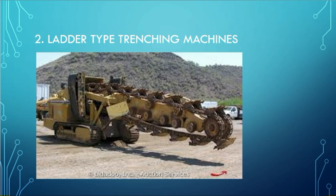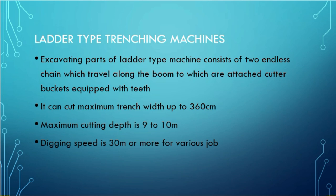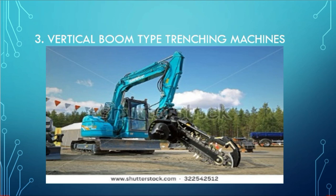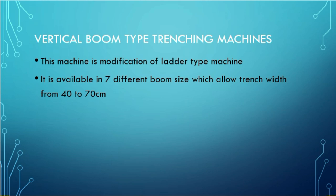This is a ladder type trenching machine and you can see the large boom. This ladder type trenching machine has a boom of 16 meters, which is larger than the wheel type, and can reach a depth of up to 10 meters. Here we can see a vertical boom type trenching machine. This vertical boom trenching machine can be oriented vertically or horizontally. It has maximum advantage over the other two types and is available in seven different volume sizes, with trench widths ranging from 40 to 70 cm.